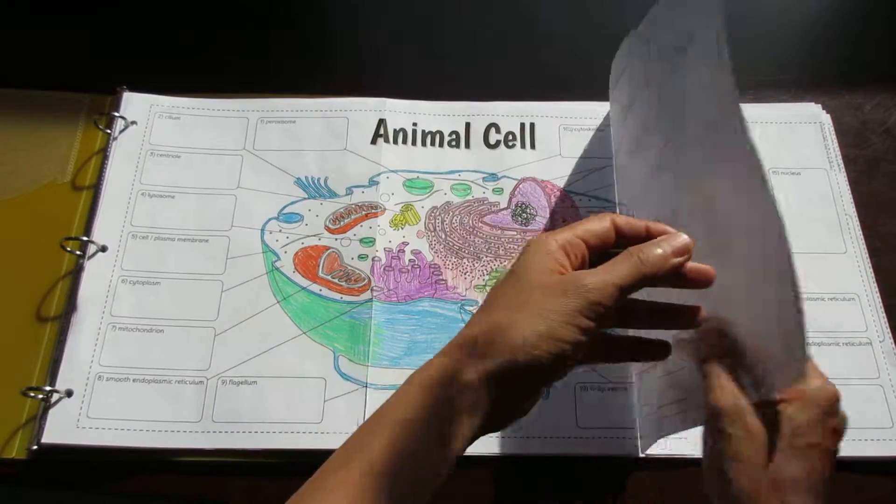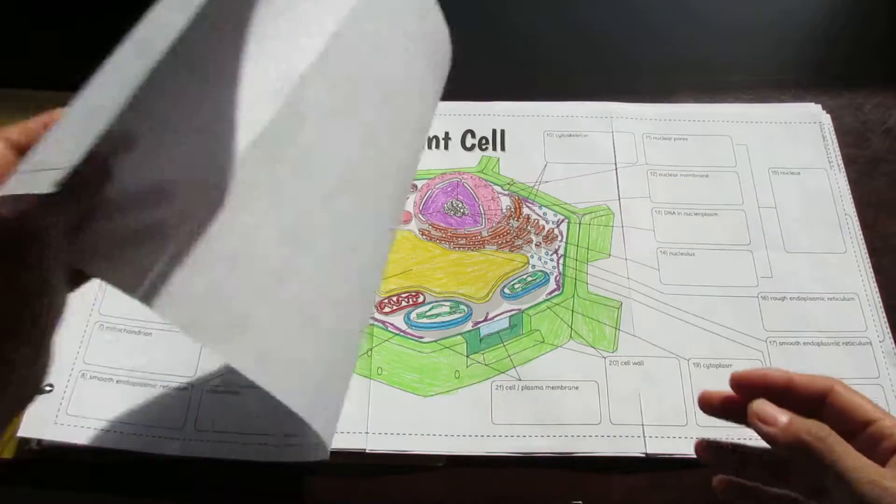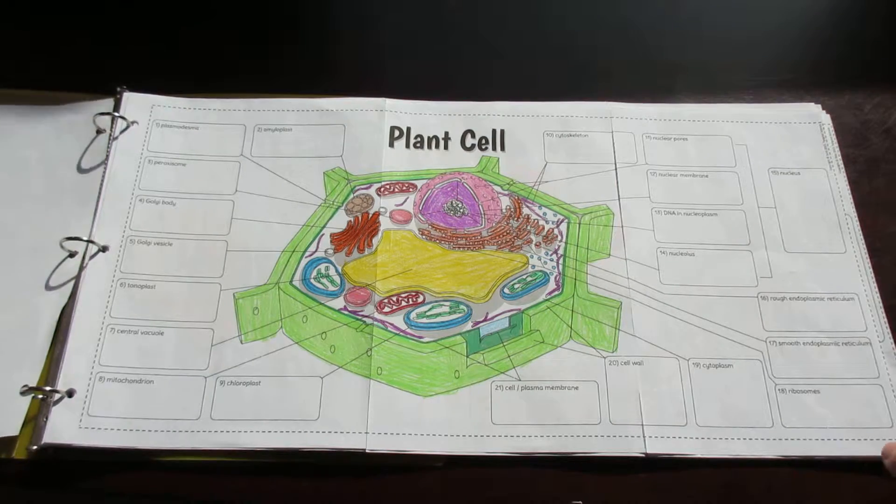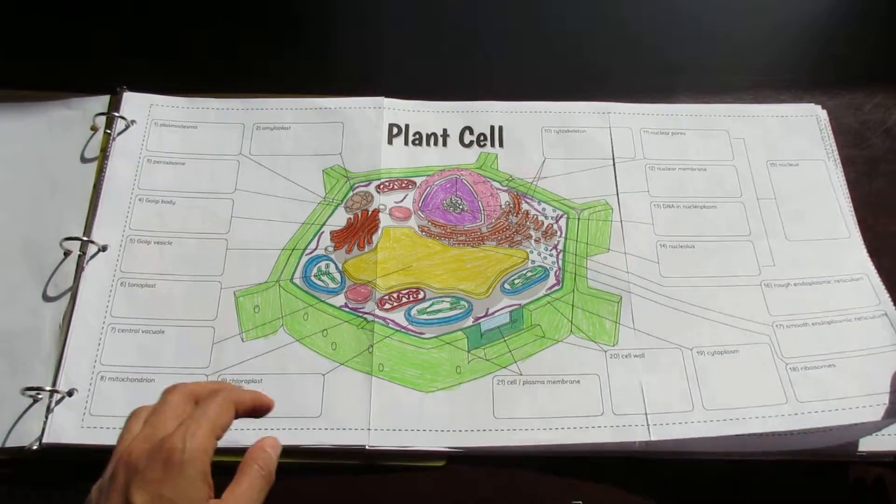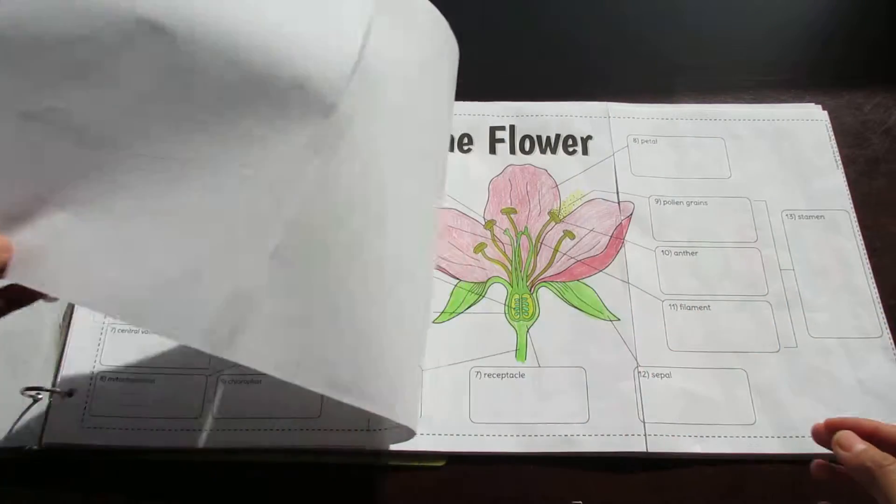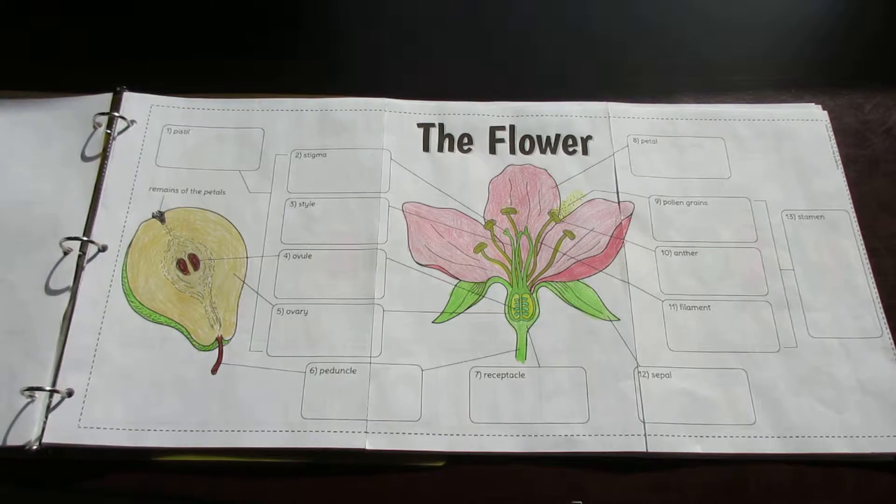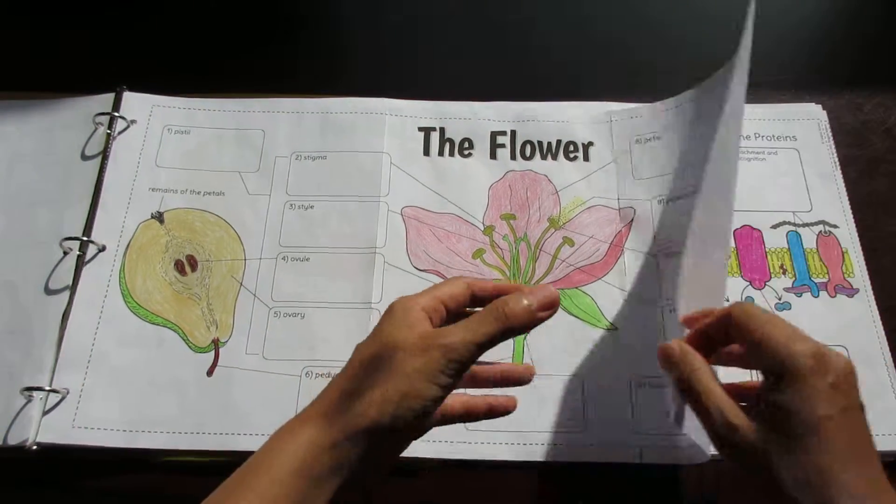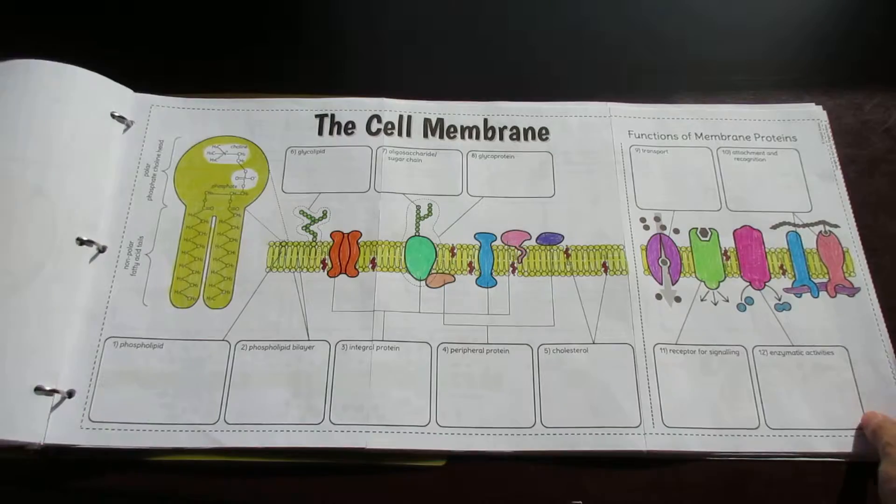So here's the animal cell and of course the animal cell would not be complete without a plant cell to go along with it. I'll just flip through several of them and you also have the flower structure, you have cell membrane,